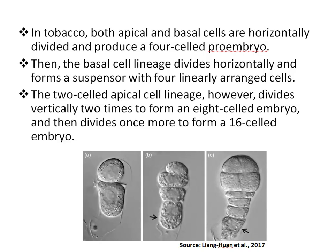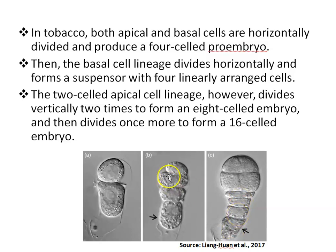Both cells originate from the same mother cell but show distinct developmental patterns and cell fates, which is a unique feature of plant embryogenesis as compared with animal embryogenesis. The asymmetrical division of the zygote not only produces two morphologically distinct cells but also establishes the original apical-basal axis of the pro-embryo. Similarly, in the case of tobacco, both apical and basal cells are horizontally divided and produce a four-celled pro-embryo. The basal cell lineage divides horizontally to form a suspensor with four linearly arranged cells, while the two-celled apical cell lineage divides vertically twice to form an eight-celled embryo, and then divides once more to form a 16-celled embryo.